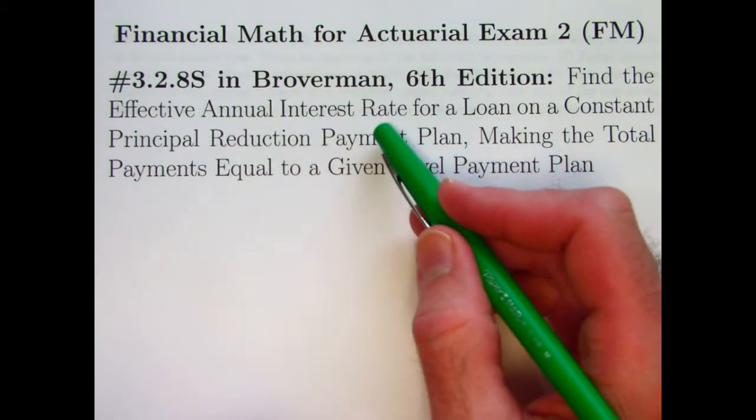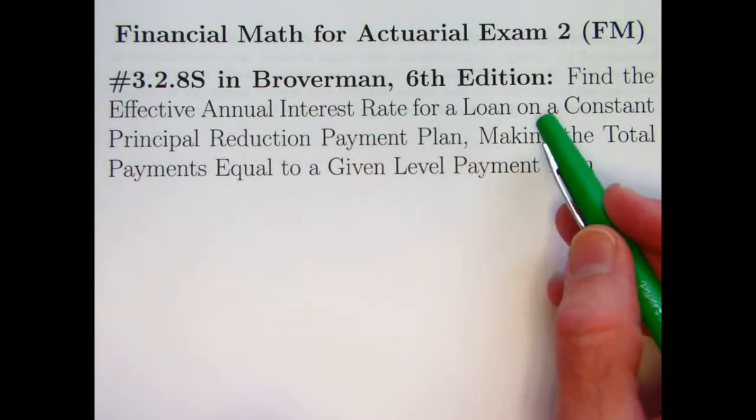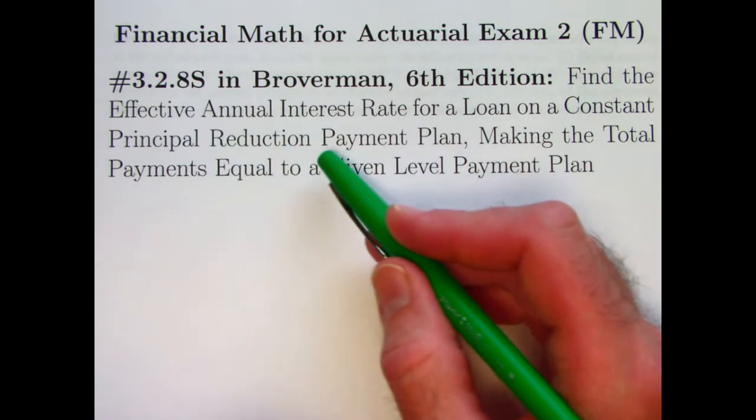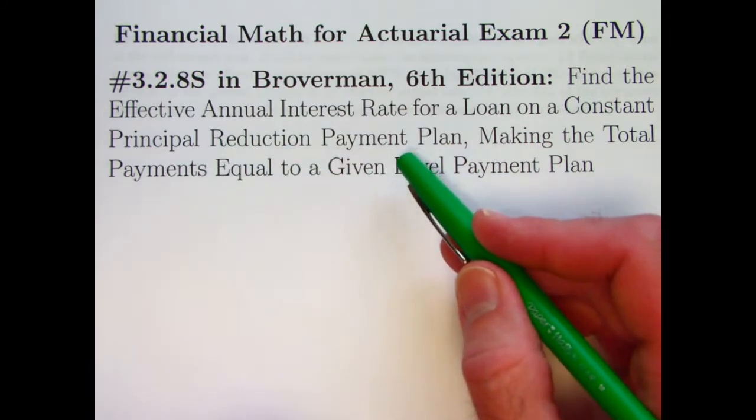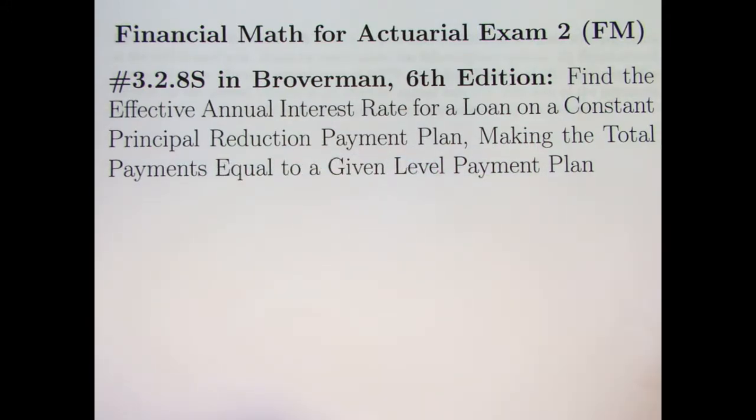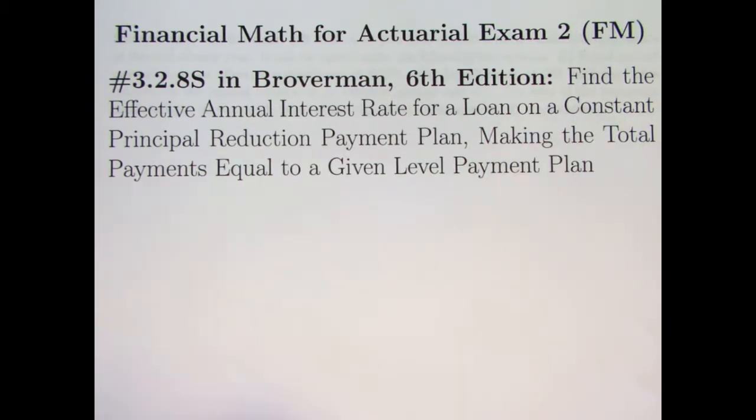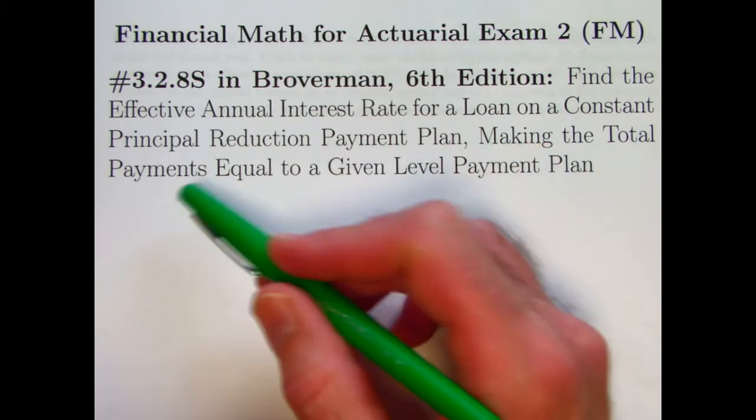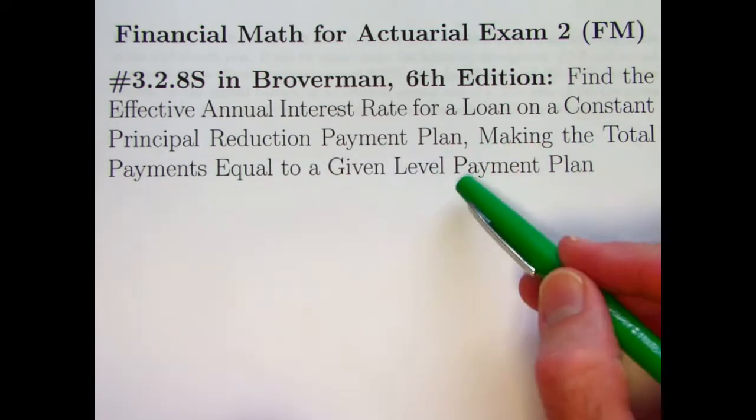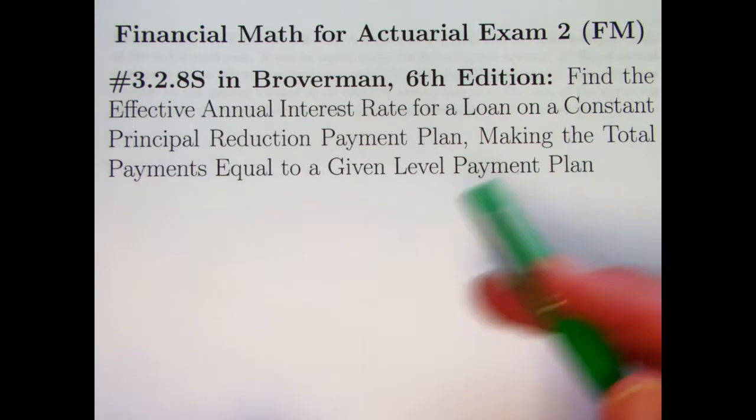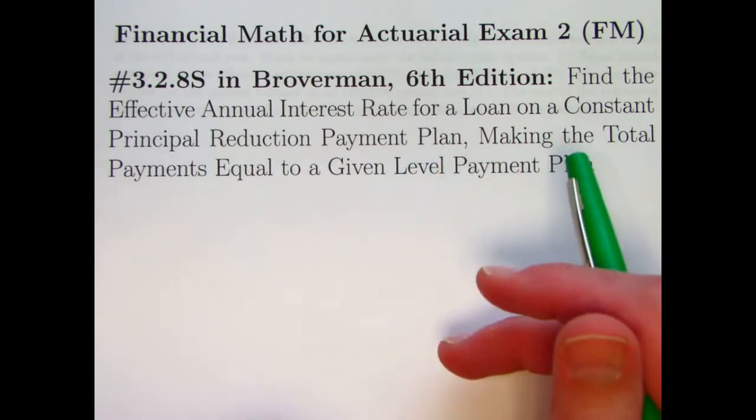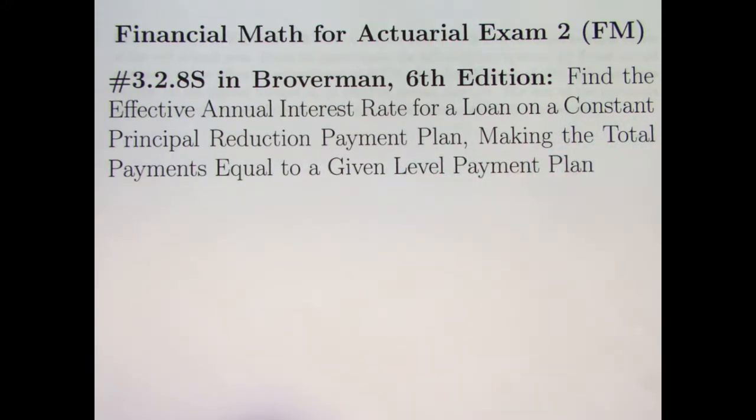Find the effective annual interest rate for a loan that's on a constant principal reduction payment plan. What that means is the principal goes down by the same amount every year in this case. That's not usually what happens. For this payment plan we're going to have the total payments equal to a given level payment plan, which is the usual kind of thing where your payments are level but a higher and higher proportion goes toward principal each year.